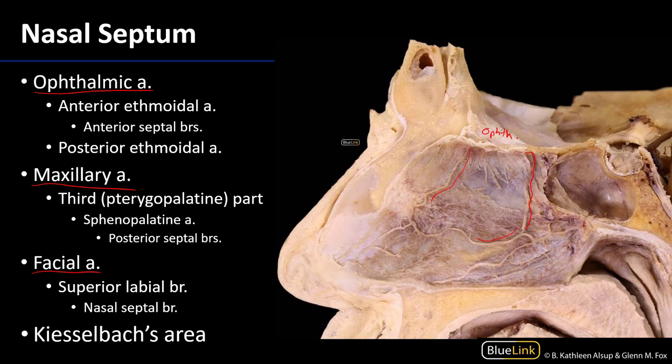Posteriorly, the sphenopalatine artery is going to serve the nasal septum through posterior septal branches. The sphenopalatine artery is a branch of the third part, or the pterygopalatine part, of the maxillary artery. Here we can see a posterior septal branch anastomosing with the posterior ethmoidal artery, and it also continues along the floor of the nasal cavity anteriorly.